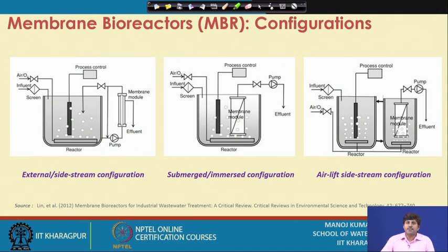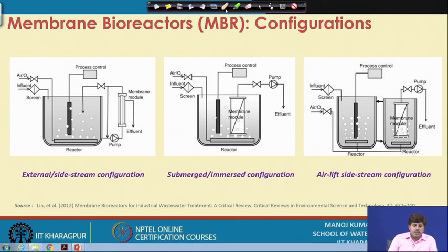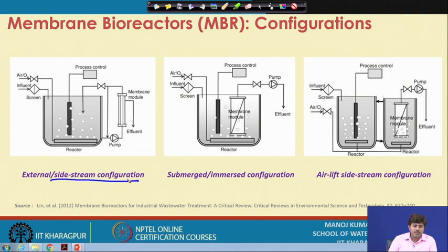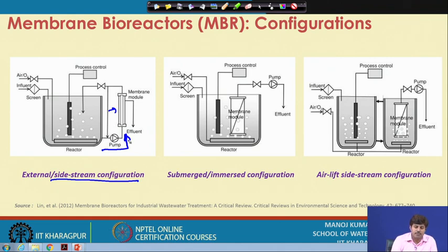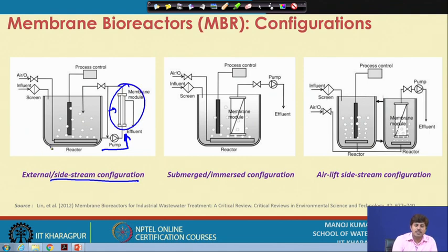There are two popular configurations of the membrane bioreactor. The first is the external or side stream configuration, which is the oldest configuration. In this setup, the membrane process is not within the reactor but outside it — a side stream from the aeration basin is passed through this external membrane, and the retentate is pushed back to the reactor.